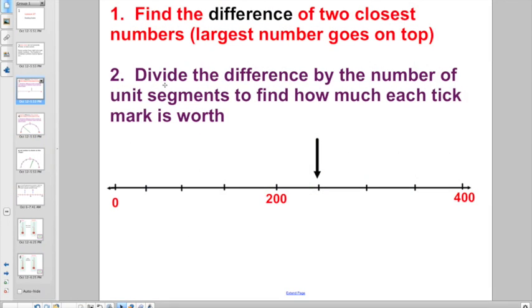So if you needed to find the numbers of an unmarked number line, find the difference, the answer when you subtract, of two of the closest numbers. And remember, the largest number has to go on top. So two of the closest numbers. You wouldn't go 400 minus zero, you would use 200 and 400. Can we do this mentally in our head? What is 400 minus 200? We better be able to. 400 minus 200 is 200.